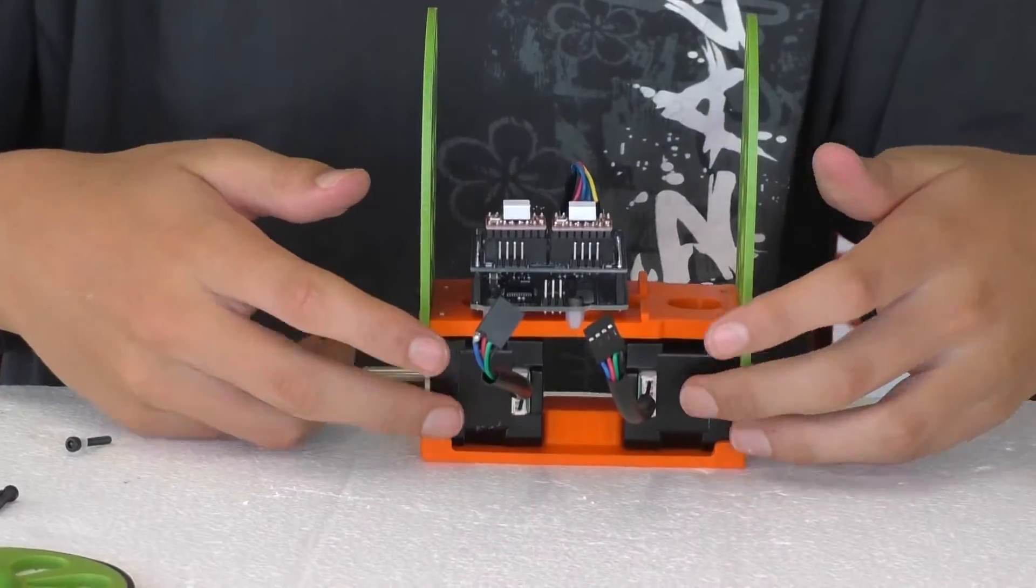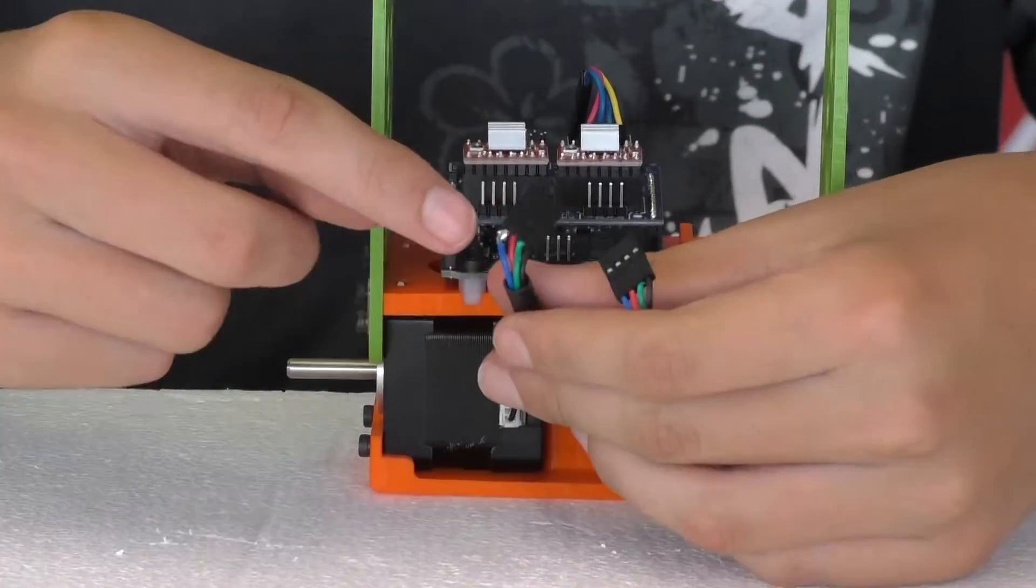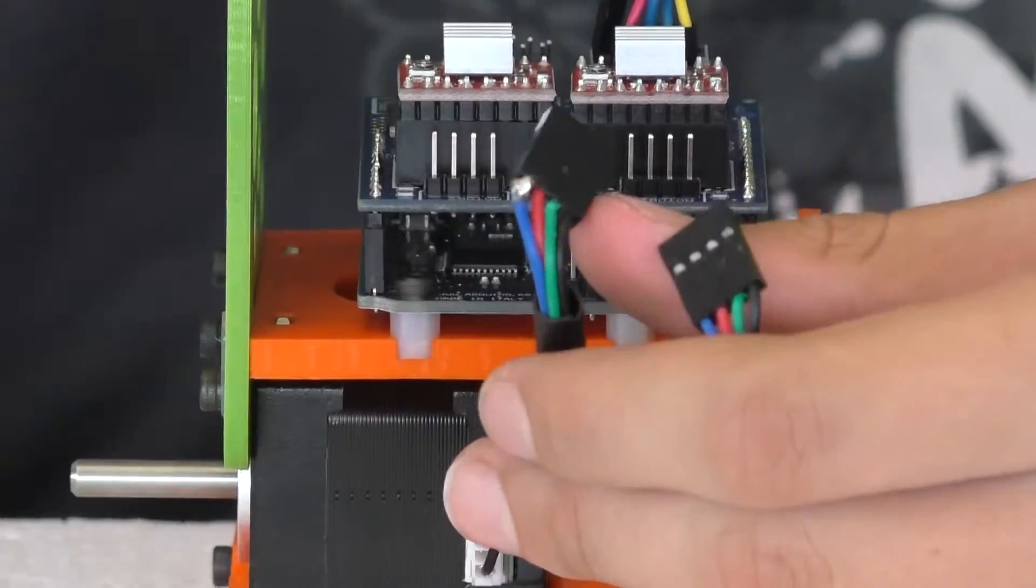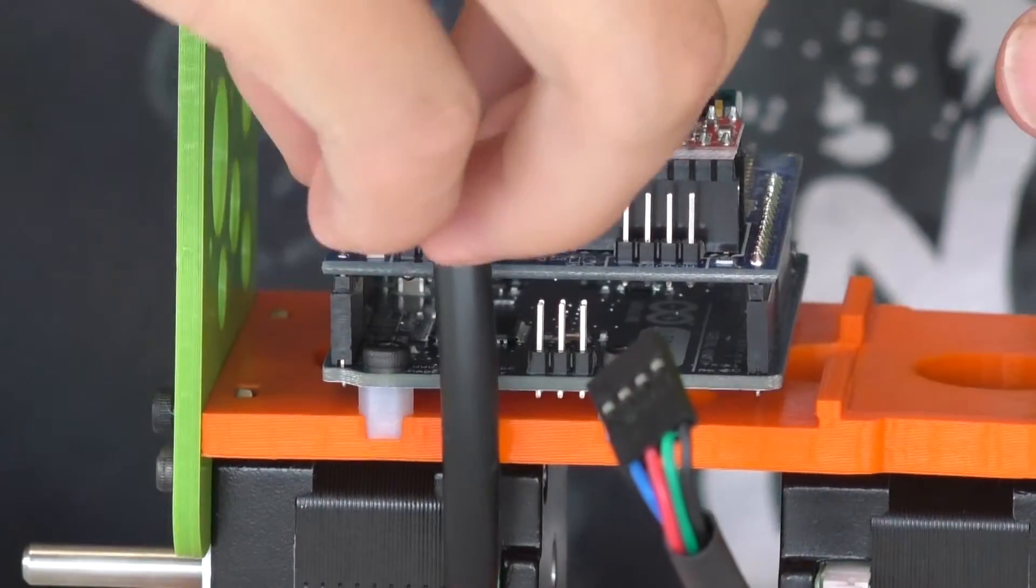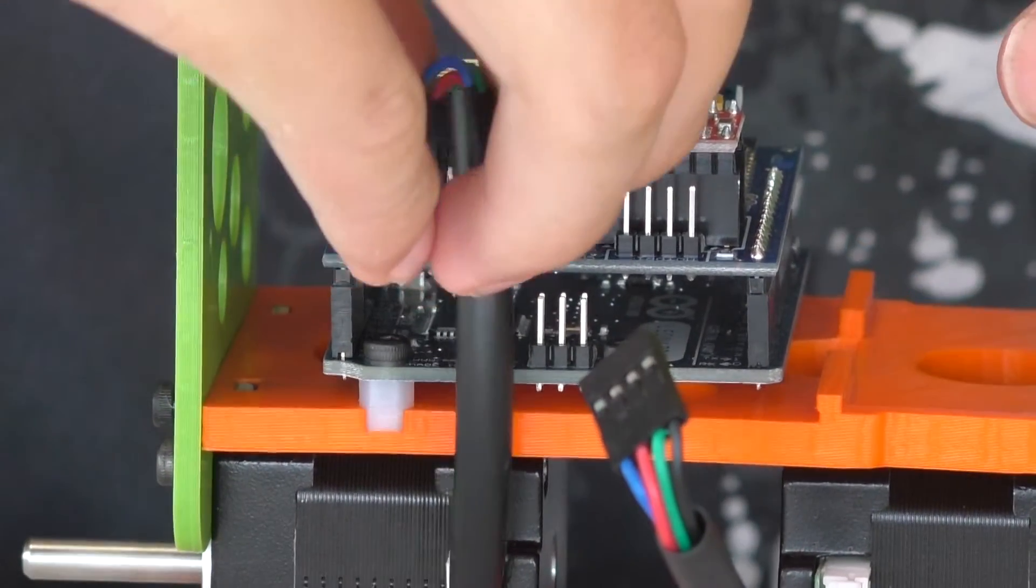Now, we're attaching the motors to the brain. Make sure that the blue cable is facing the power socket. This goes for both of the motors.